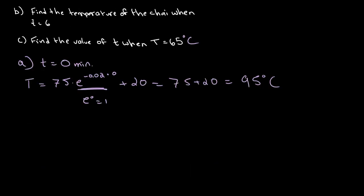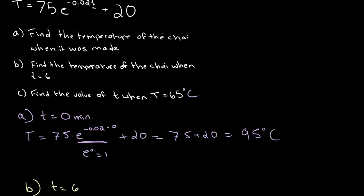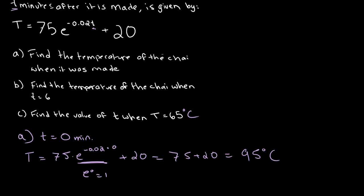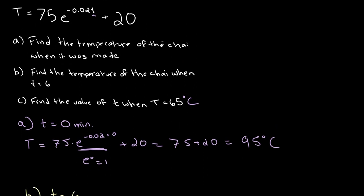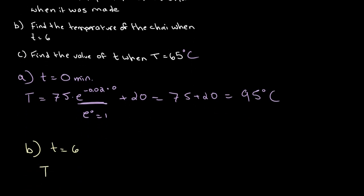That was pretty simple. Now, let's go on to part B. Part B asks us to find the temperature of the chai when T is equal to 6. So when T is equal to 6, once again, all we need to do is plug this value for time into our equation. And this gives us T, or temperature, is equal to 75 times e to the power of negative 0.02 times 6 plus 20.